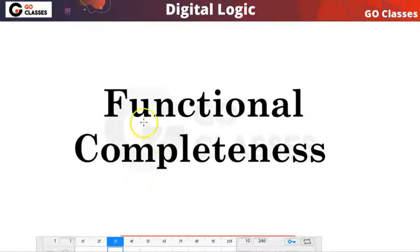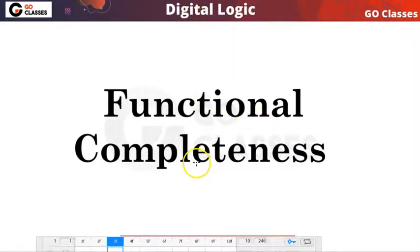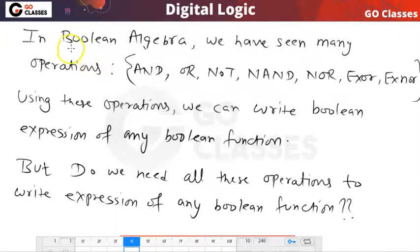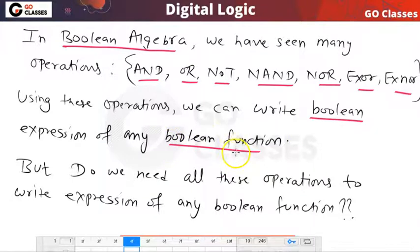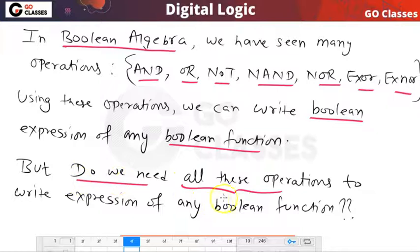Hi everyone, welcome to Go Classes. In this lecture we will study functional completeness. This topic you will find in many subjects, for example in propositional logic, in set theory, and many different subjects. We will study functional completeness from a digital logic point of view. In boolean algebra, we study many operations — AND, OR, NOT, NAND, NOR, XOR, XNOR — and using these operations we can write any boolean function. But the question we want to ask is: do we need all these operations?